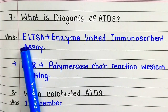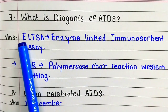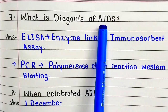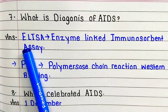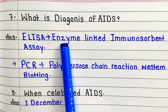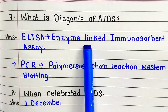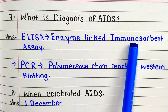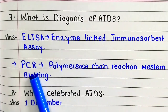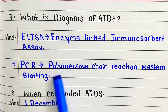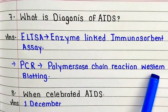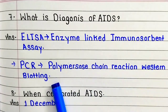Question number seven: what is the diagnosis of AIDS? Answer: ELISA — enzyme-linked aminosorbent assay; PCR — polymerase chain reaction; and western blotting.